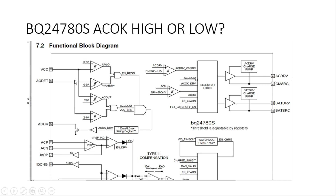Now checking the other input of that AND gate: there is one more comparator where the positive input is AC detect and the negative is 0.6 volts. AC detect is usually 2.6 volts due to a voltage divider. Since 2.6 V is greater than 0.6 V, the result is positive — logically high. So this AND gate has two high inputs, giving a high output. This high output then goes as one input leg to the next AND gate. Let us check the other leg of that AND gate.